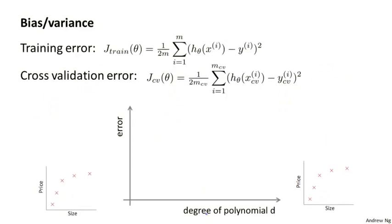Concretely, let's define our training error and cross-validation error as in the previous videos — the average squared error as measured on the training set or on the cross-validation set. Now let's plot the following figure. On the horizontal axis, I'm going to plot the degree of polynomial, so as I go to the right I'm fitting higher and higher order polynomials.